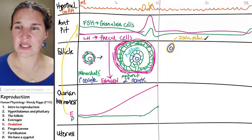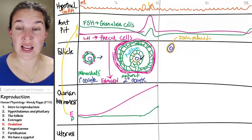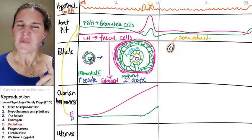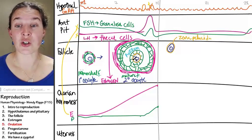Zona pellucida. And the zona pellucida is actually around the outside of my oocyte, not at the primordial follicle stage, but by the time it's a mature follicle, it definitely has a zona pellucida surrounding it.